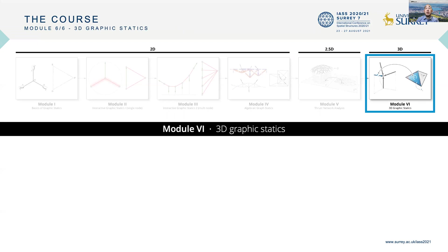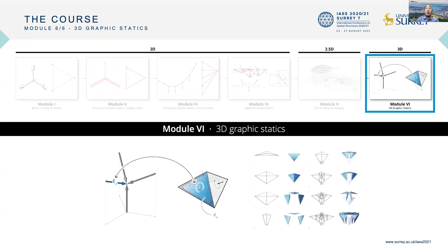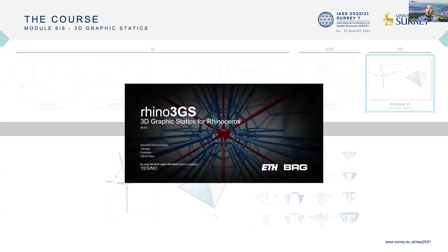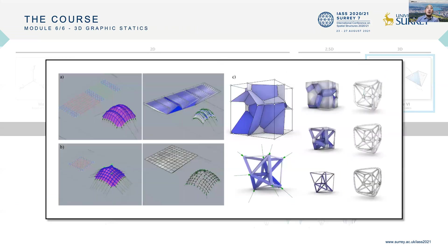Finally, in Module 6, students learn how to use polyhedral reciprocal diagrams to explore structures in 3D. Students learn how to use force diagrams, which are polyhedral cells, to relate back to the other methods previously in the class, and they also learn how to use these geometry and force diagrams to develop fabrication geometry.